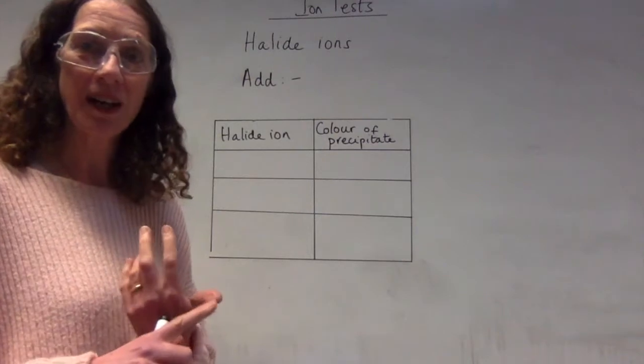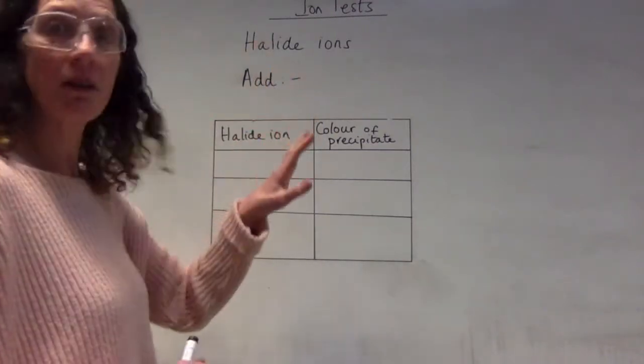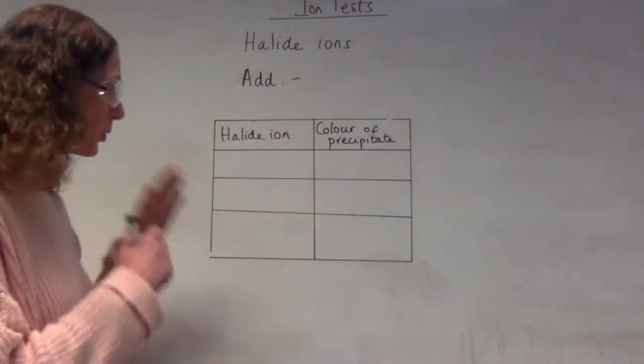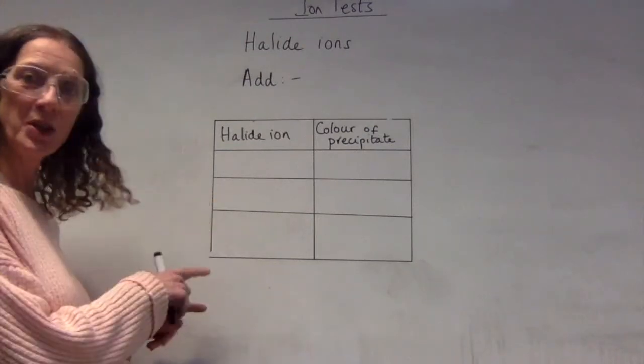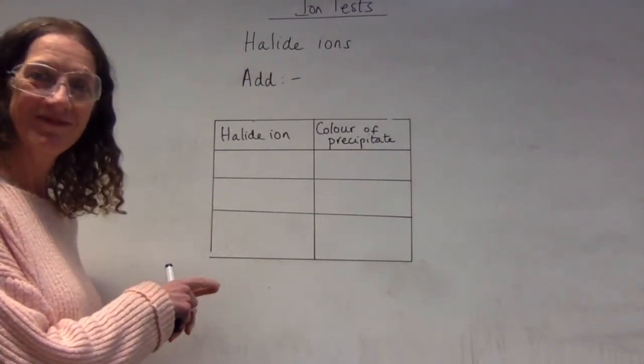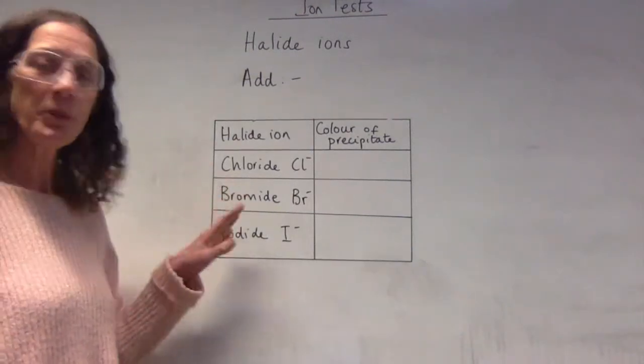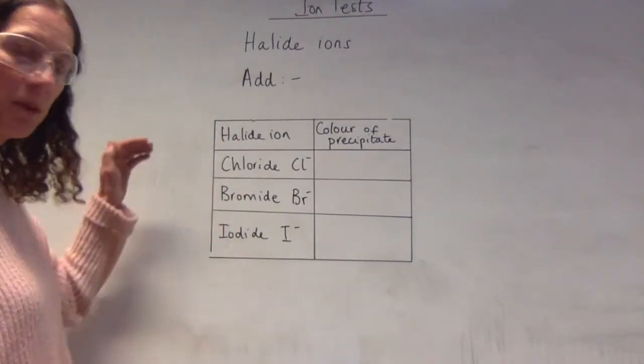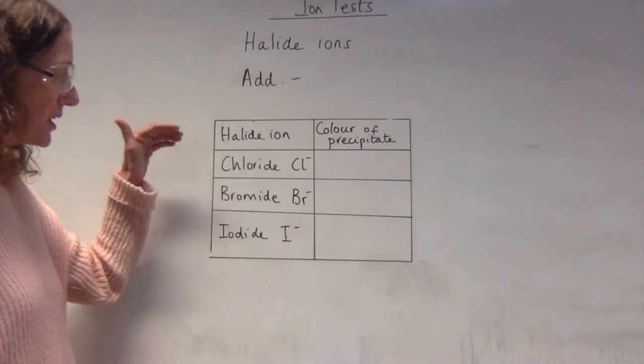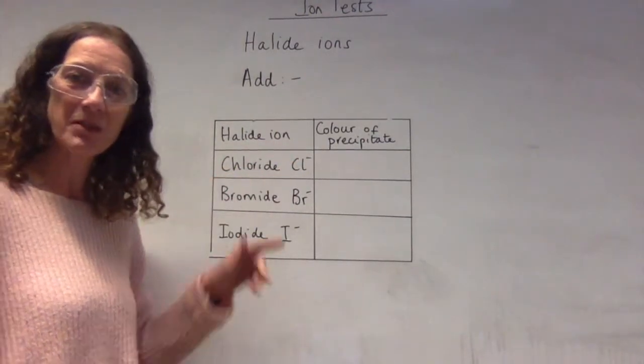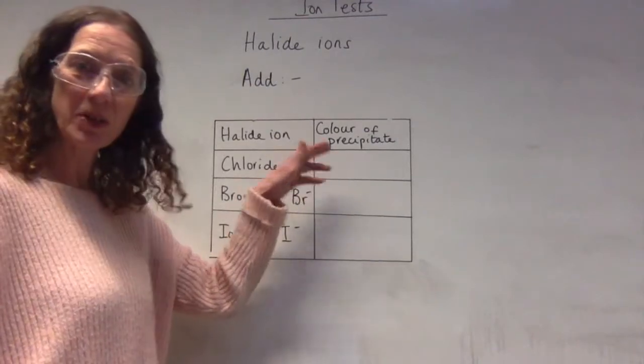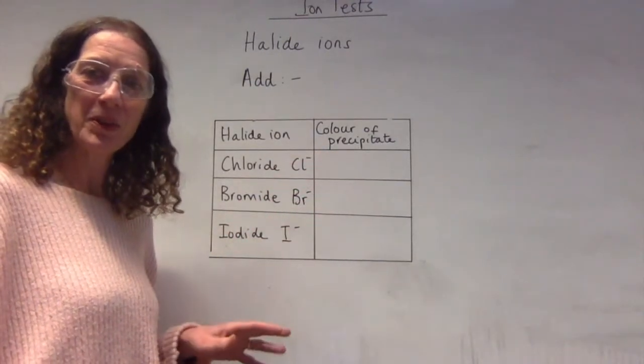Don't use fluoride because it's too reactive. So the three we are going to have a look at are the chloride, the bromide, and the iodide, and I'm just going to pop that in first. Now I've actually put them in in the order of the periodic table because that's how I remember the colours of the precipitates. It really helps me because you'll see the pattern as we fill these in.